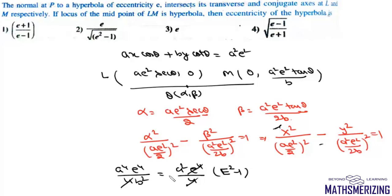Here 4 and 4 will cancel, E to the 4 will cancel, A squared will also cancel. So we will get A squared upon B squared equals E squared minus 1.